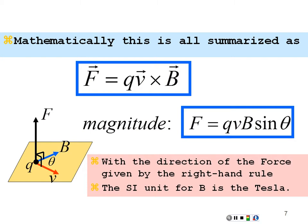The velocity and magnetic field form a plane, and the force is perpendicular to that plane. If the charge is negative, perform the cross product and then flip the result 180 degrees to get the direction of the force.